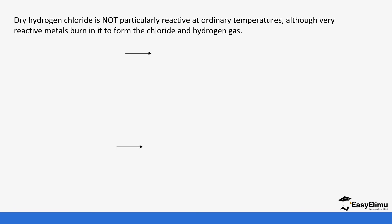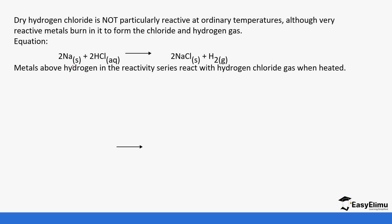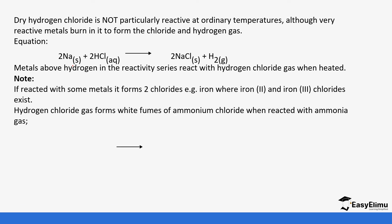Dry hydrogen chloride is not particularly reactive under ordinary conditions, although when metals are burned in it, they form a chloride and hydrogen gas. For example, sodium reacts with dry hydrogen chloride to form sodium chloride and hydrogen gas. Metals above hydrogen in the reactivity series react with hydrogen chloride gas when heated. When reacted with iron, two chlorides can form: iron(II) chloride and iron(III) chloride.